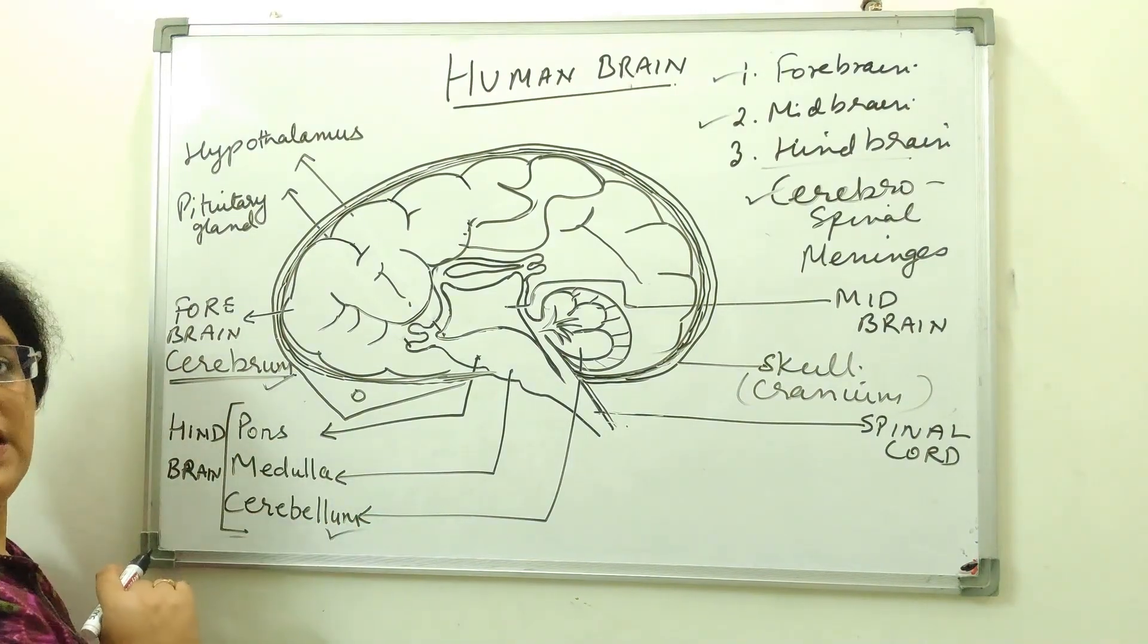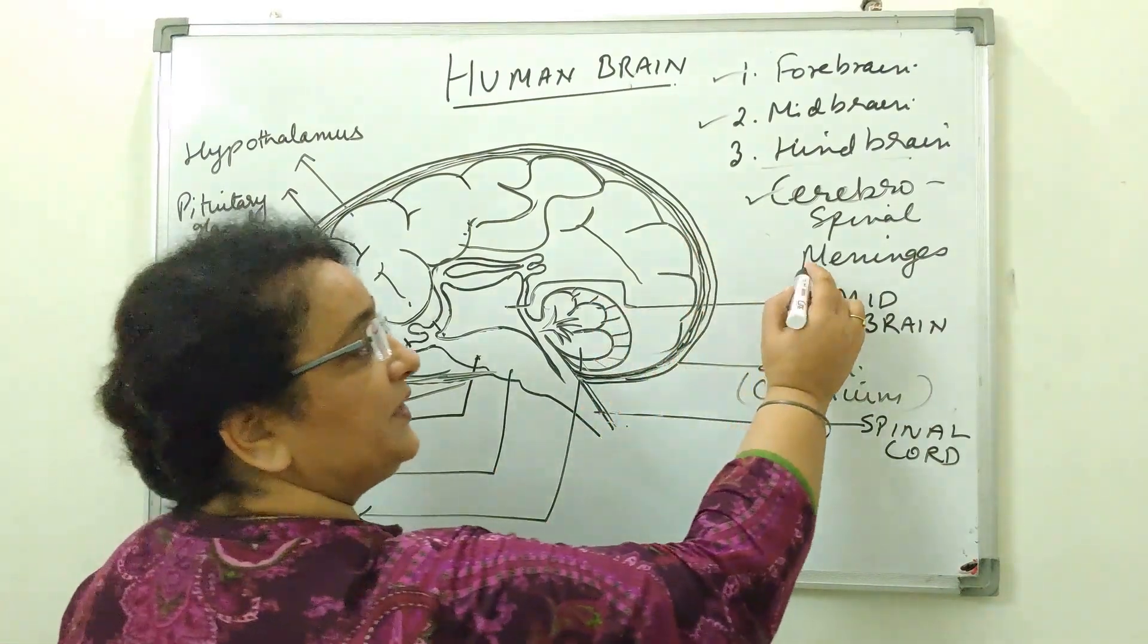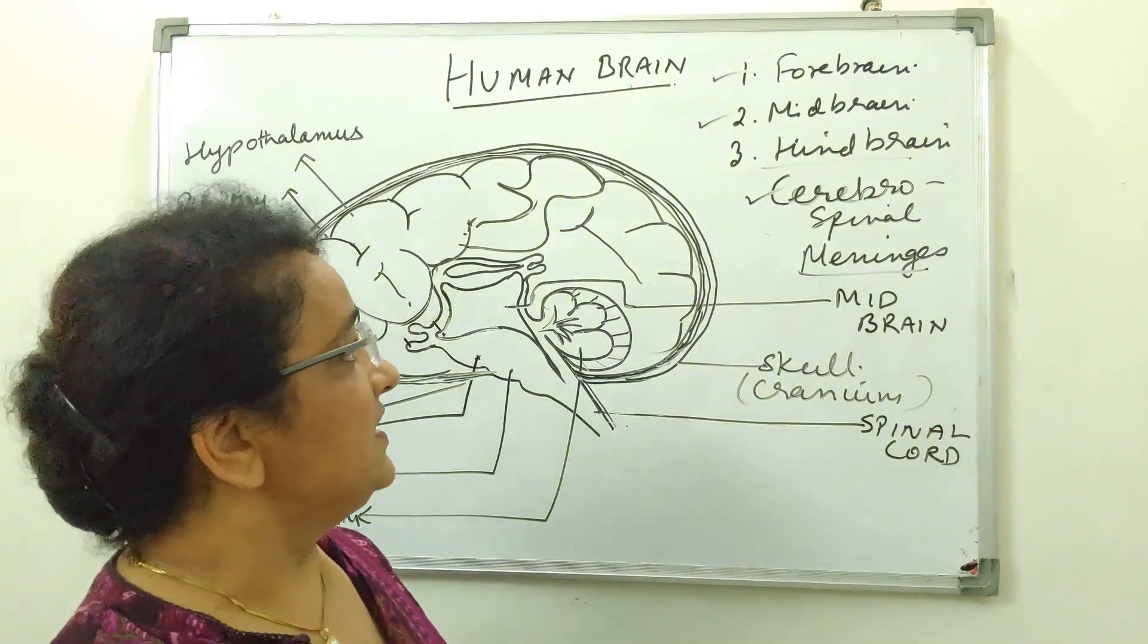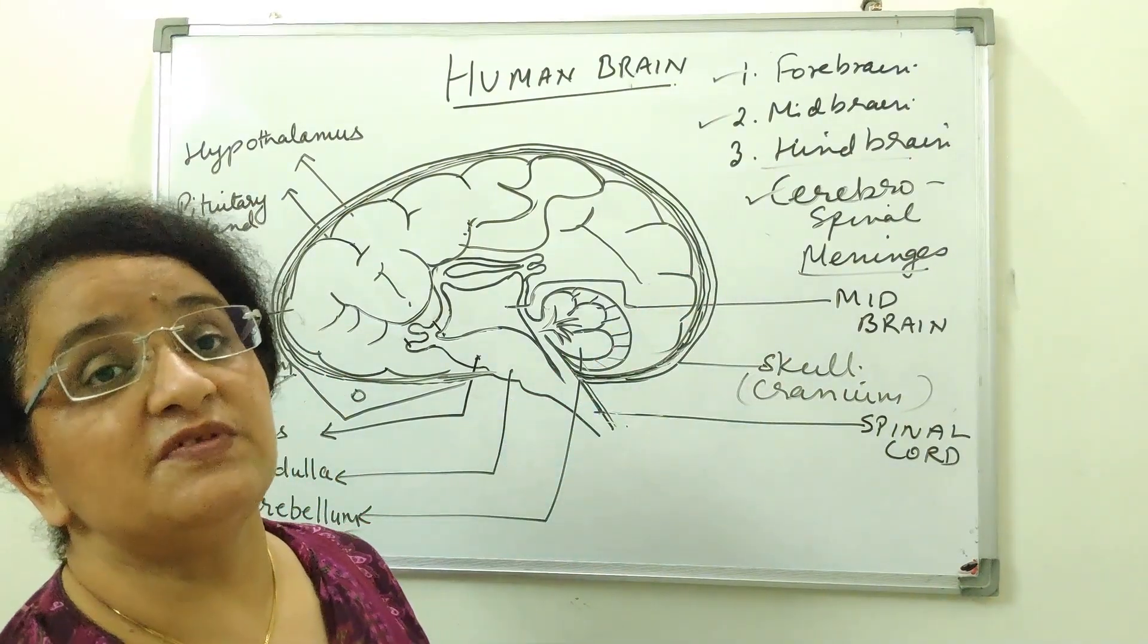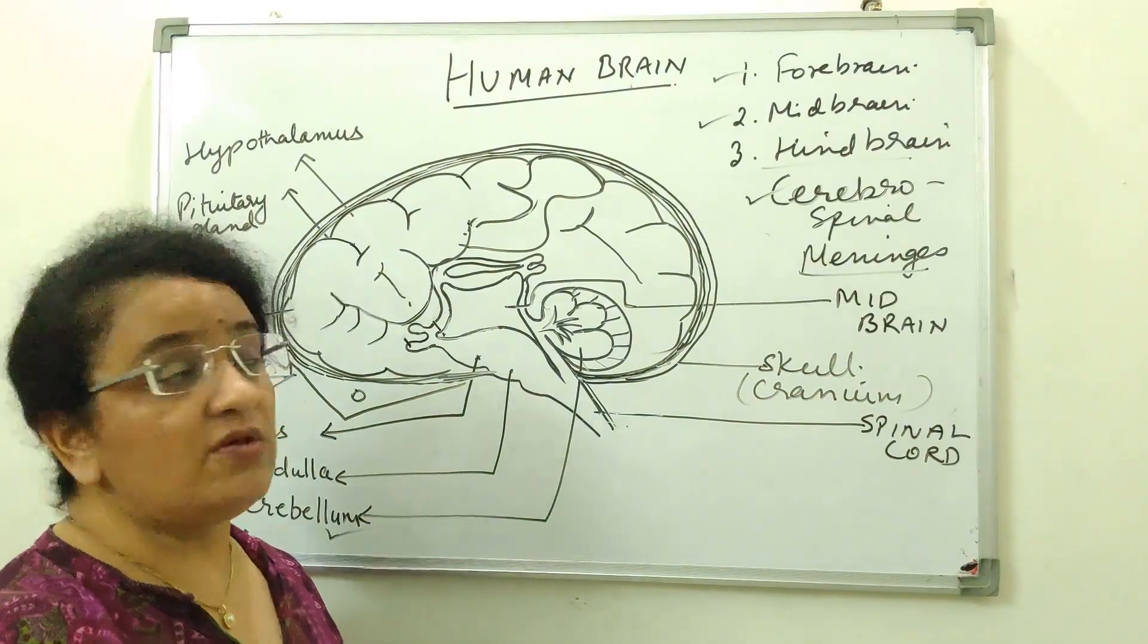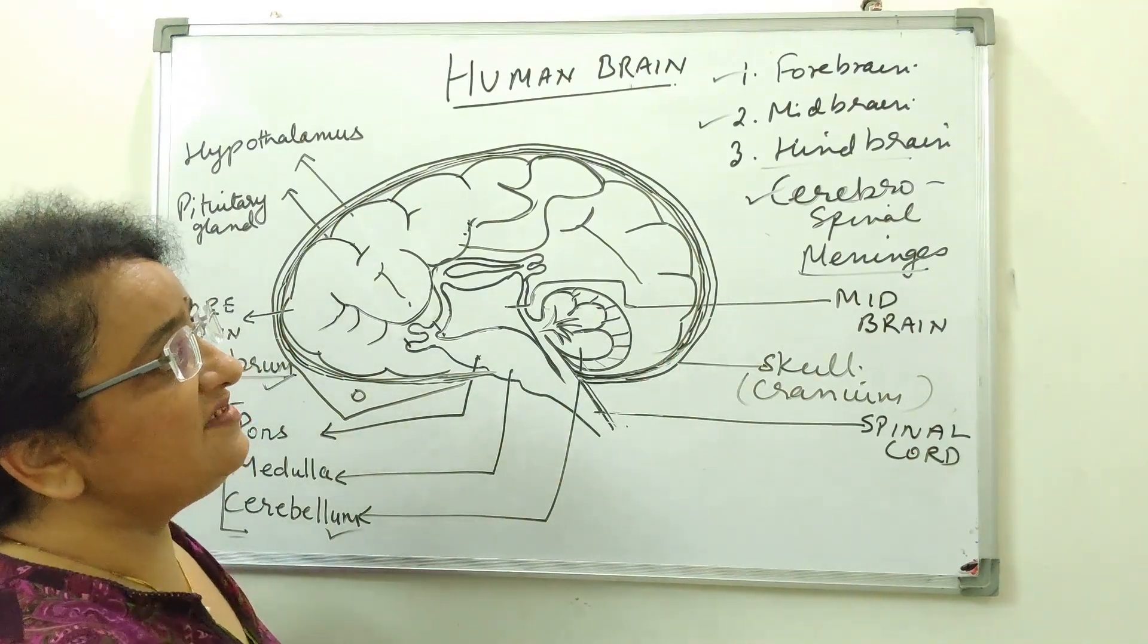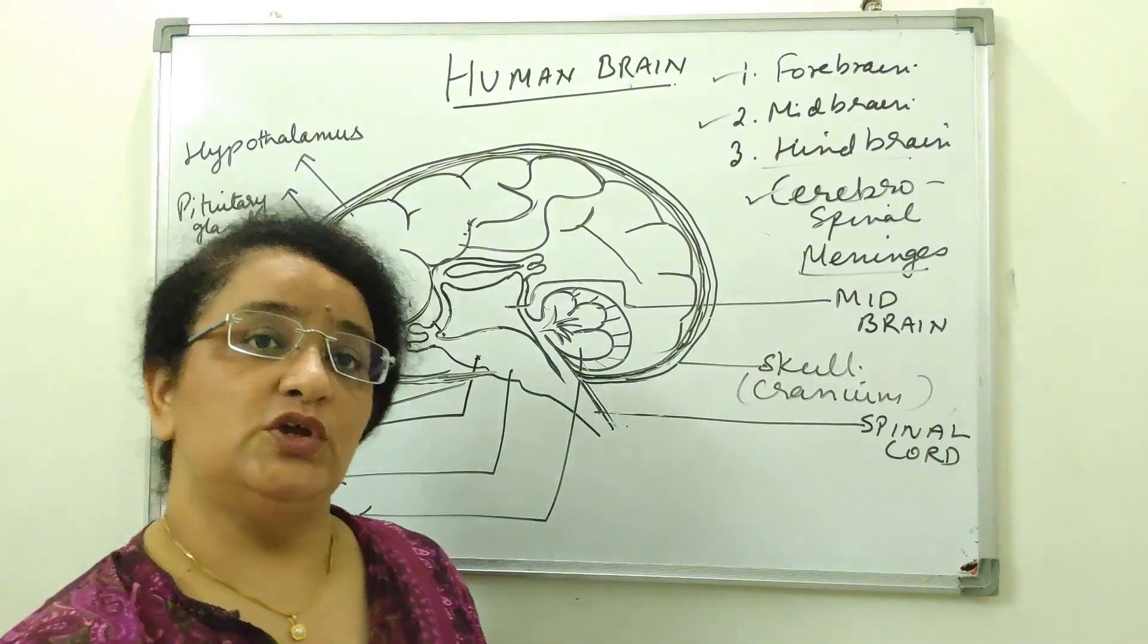Now this brain is covered with the protective coverings called meninges. And these meninges, they enclose a cavity that is known as cerebrospinal cavity, which includes a fluid called cerebrospinal fluid, which protects the brain against the chemical shocks and injury. And outside the meninges, the brain is covered with the bone structure called skull. So this is all for the diagram of the human brain.